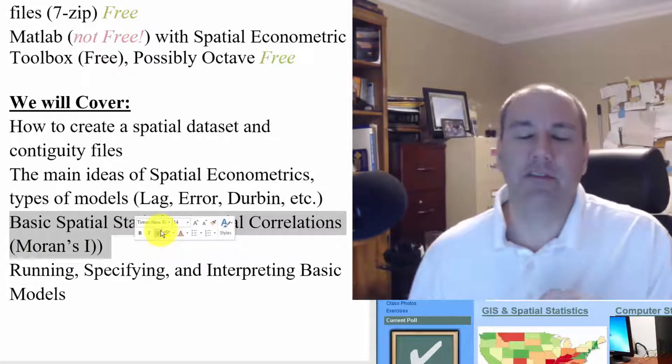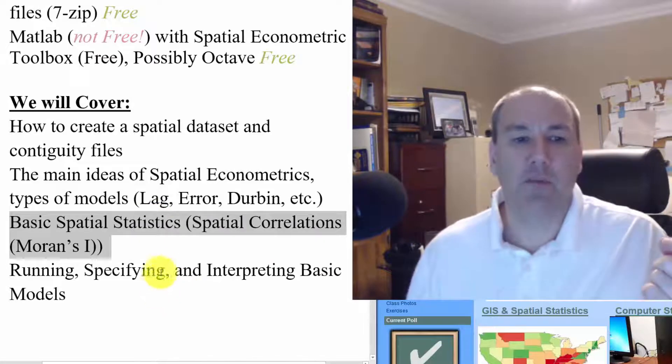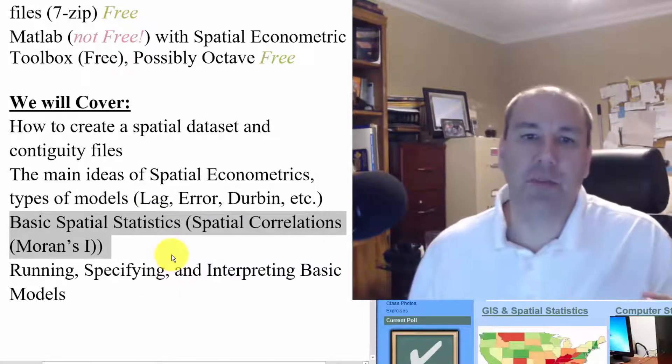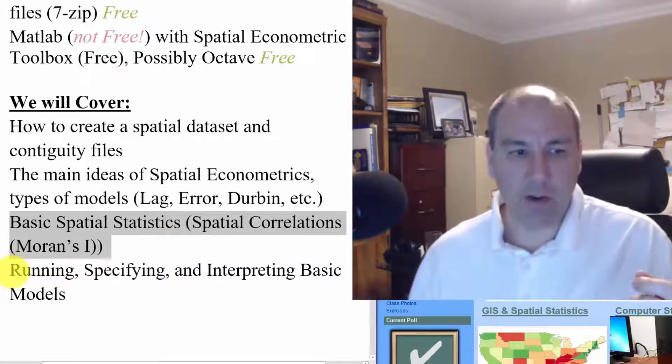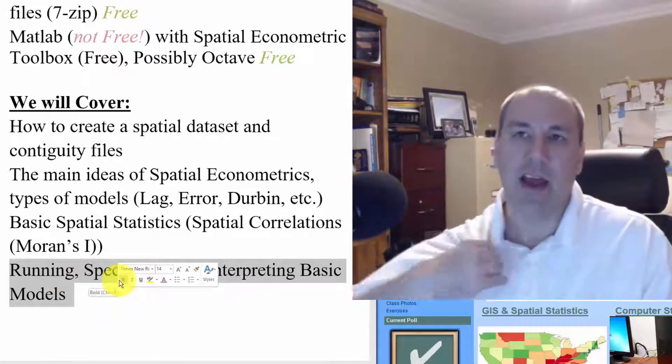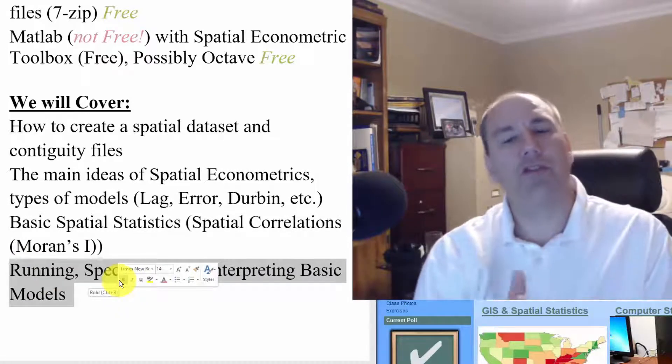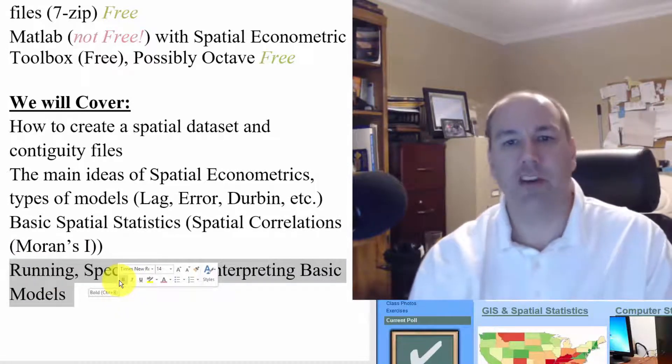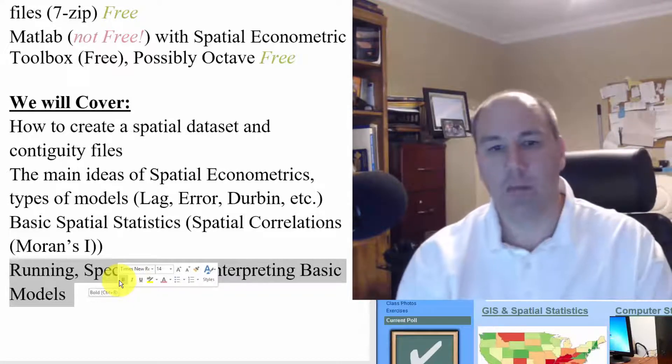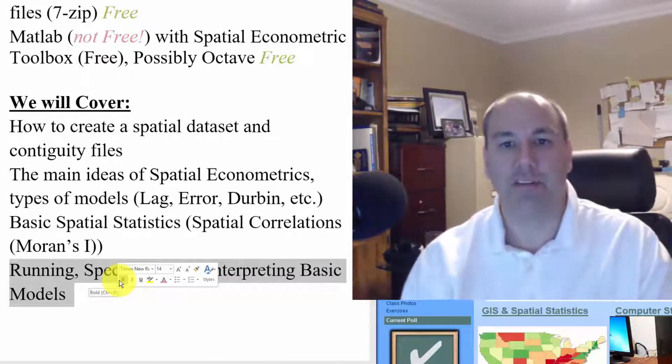We'll also talk about some basic spatial statistics, like Moran's I, basically what we call a spatial correlation, and we'll talk about how do you figure out what's the right spatial specification. Is it a spatial lag model, an error model, a spatial Durbin model, etc.